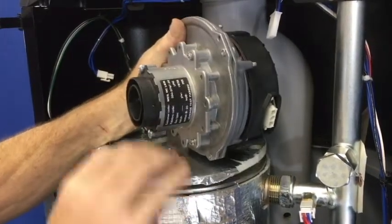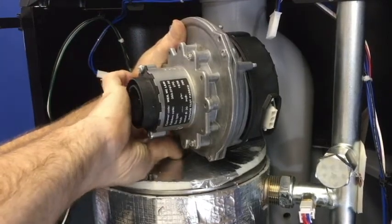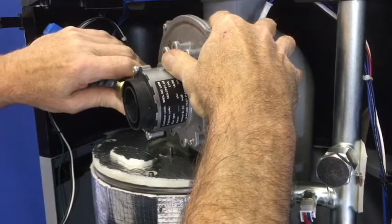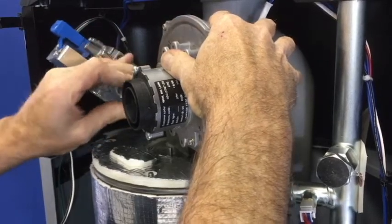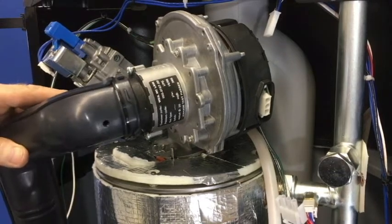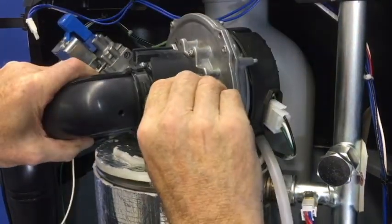Make sure you use the gasket between the blower and the cover plate. Next, replace the gas valve fiber washer and tighten. Reinstall the air silencer, then the silencer clip.